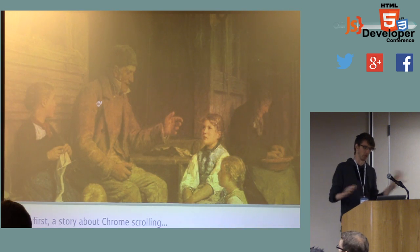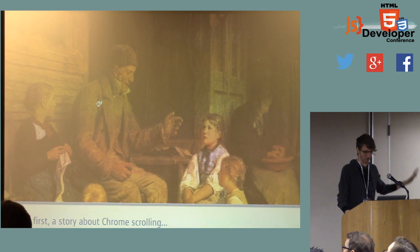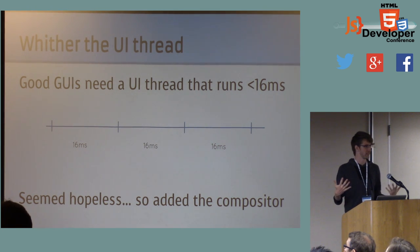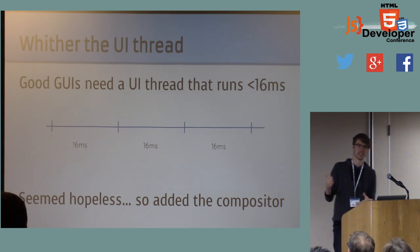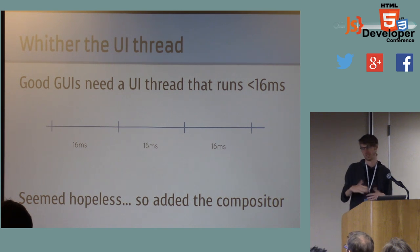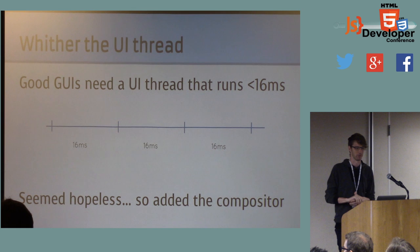Before we do touch, a little aside about how we got to the state we're in, because it sucks, but there are reasons. A good GUI needs a UI thread that finishes its work in time to make a new frame every 16 milliseconds. 16 milliseconds comes from the interval between a 60 Hz display refresh. Some displays are faster than that, giving you even less time, but most mobile phones and laptops are 60 Hz.